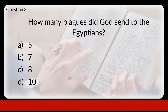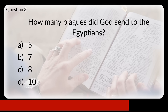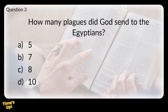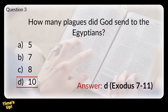Question three: how many plagues did God send to the Egyptians? Was it five, seven, eight, or ten? God sent ten plagues.